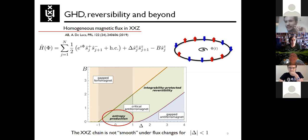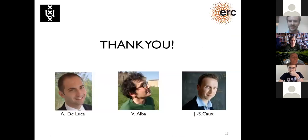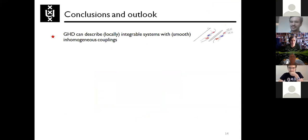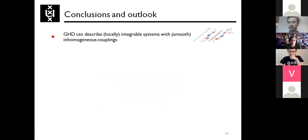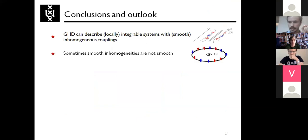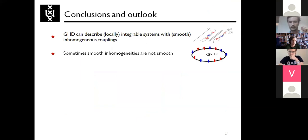Let me conclude. Summary: I showed that it is possible to include inhomogeneities in the dynamics of an integrable model, as long as they locally respect the integrability of the model. Then I pointed out a situation where something that is actually smooth in the parameters is not smooth in the dynamics — in the sense that you escape the usual GHD picture.